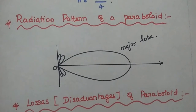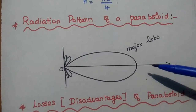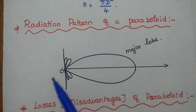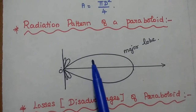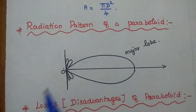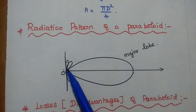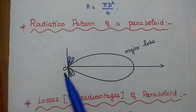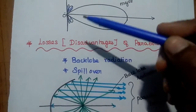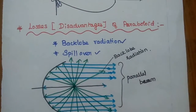The radiation pattern of a paraboloidal reflector antenna shows maximum signal radiated in a particular direction. There is no back lobe — no radiation in the back side — because all signals are radiated in the forward or desired direction. There may be some minor side lobes. These side lobes are created because of two losses of the paraboloidal antenna.